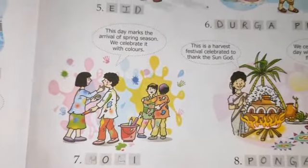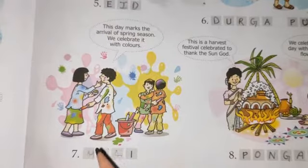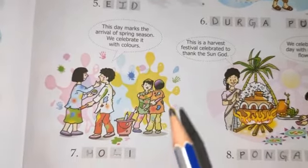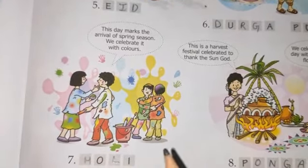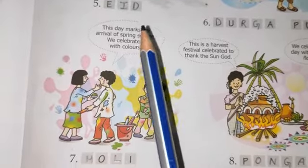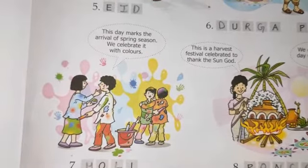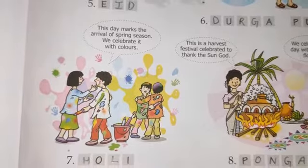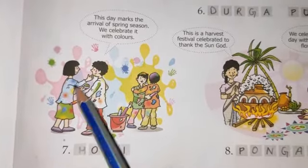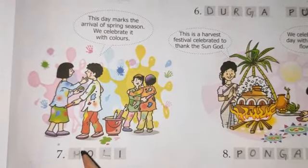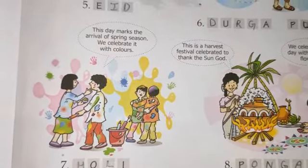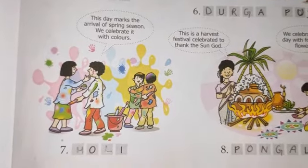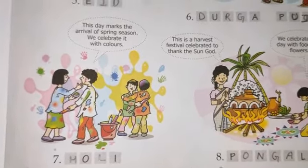The next clue: you can see a lot of colors — it is the festival of colors. This day marks the arrival of the spring season and we celebrate it with colors. So we celebrate the festival Holi with colors. The spelling is H-O-L-I.